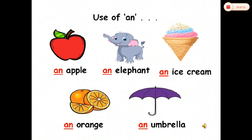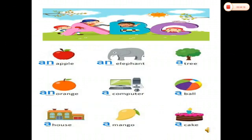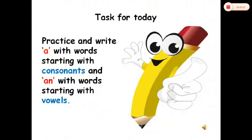Let's revise: an apple, an elephant, an ice cream, an orange, an umbrella. Now we will revise the use of 'a' and 'an'. Word 'apple' starts with the letter A, so we use 'an': an apple. An elephant, a tree, an orange, a computer, a ball, a house, a mango, a cake. These are some more examples of the use of 'a' and 'an'.